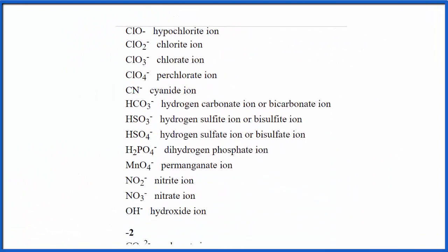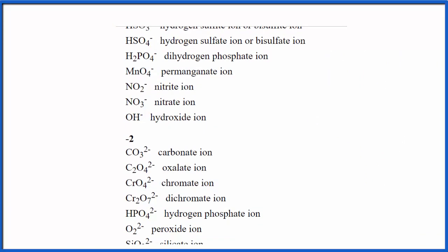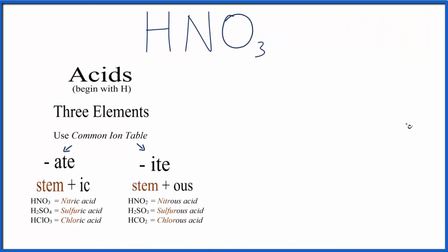So we'll scroll down the table here, and we're looking for NO3. And there it is. NO3 is nitrate. So we'll go back to our flowchart and write nitrate.